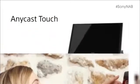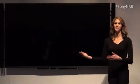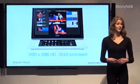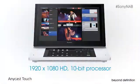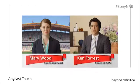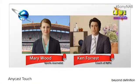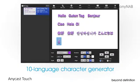With Anycast Touch, the whole world is watching, and your on-air look is fully professional. The processing core is full HD with 10-bit precision, as opposed to the typical 8. You can build sophisticated images with two titles, two logos, and up to two pictures-in-picture. The audio mixer includes limiter, compressor, equalization, and delay. The titler covers 10 languages.